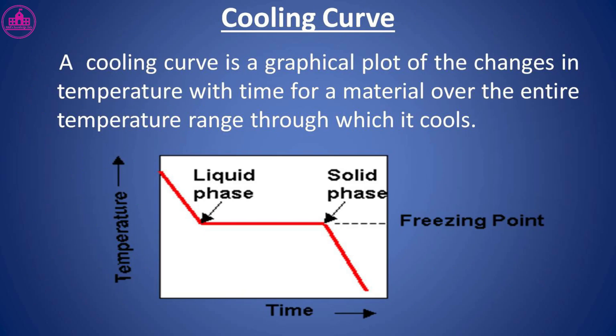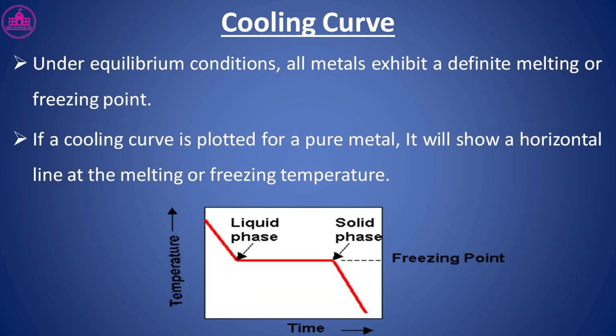A cooling curve is a graphical plot of the changes in temperature with time for a material over the entire temperature range through which it cools. Under equilibrium conditions, all metals exhibit a definite melting or freezing point. If a cooling curve is plotted for a pure metal, it will show a horizontal line at the melting or freezing temperature.